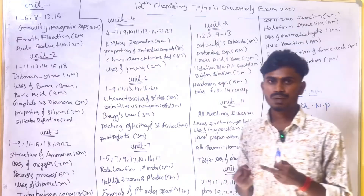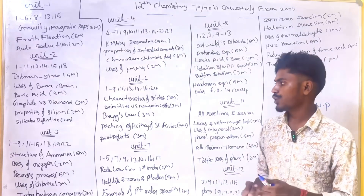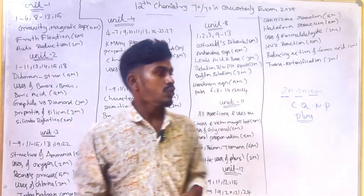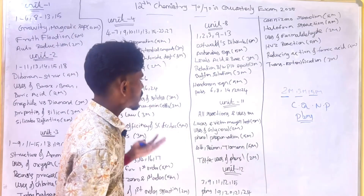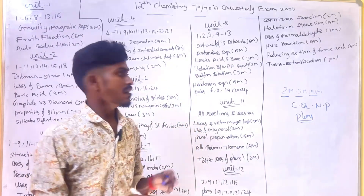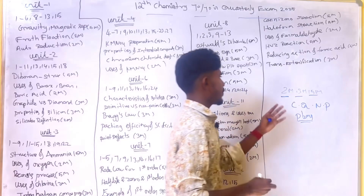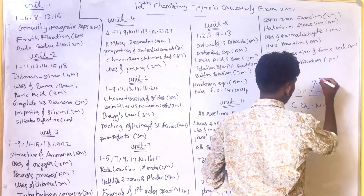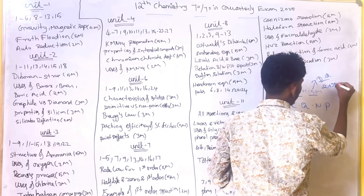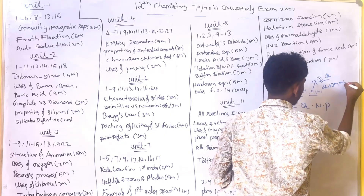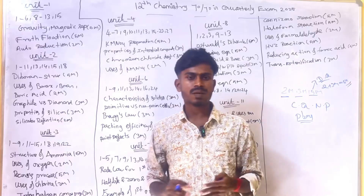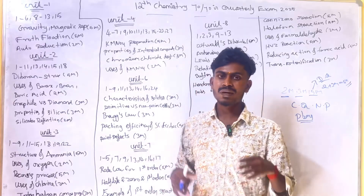So we will cover chemistry Units 1, 2, 3, 4, 6, 7, 11, and 12. For the quarterly exam, Unit 8 is also included. Here are the important 2 mark, 3 mark, and 5 mark questions. For 5 mark questions you will get direct questions, and the 2 plus 3 mark format makes up the majority of questions.